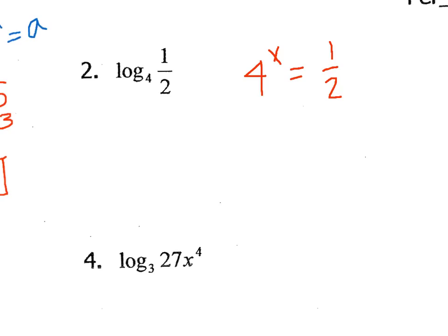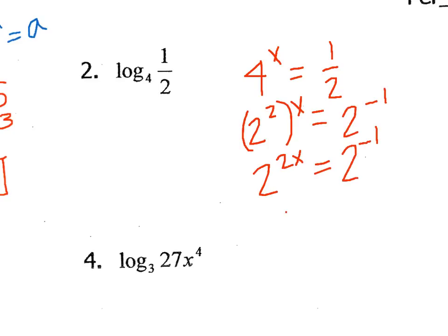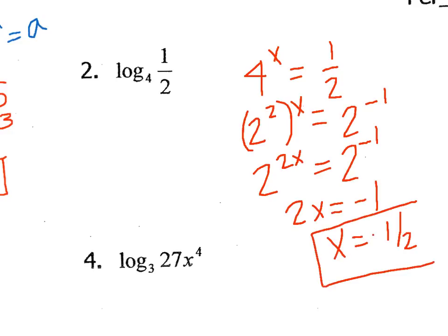Looking at number 2, we could use change of base. I think that's pretty self-explanatory, so I'm just going to use the second method. I would make this 2 squared to the x equals 2 to the negative 1. Since I'm taking an exponent to a power, I would multiply. My bases are the same, so I'm setting my exponents equal, so x is equal to negative one half.